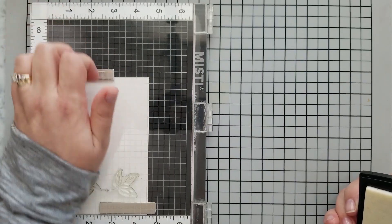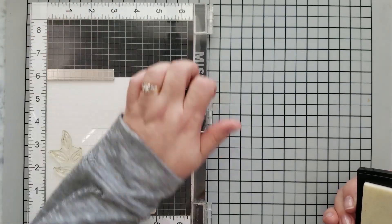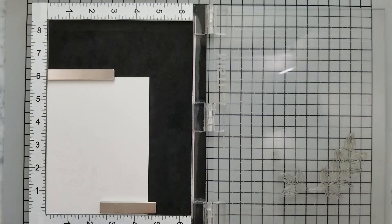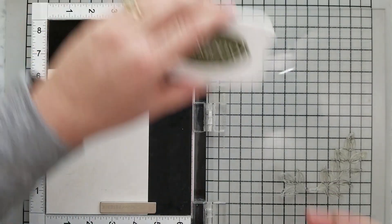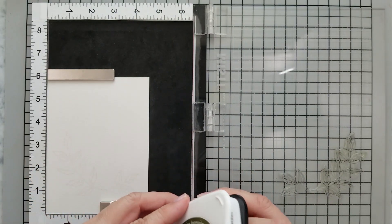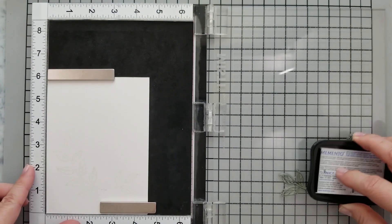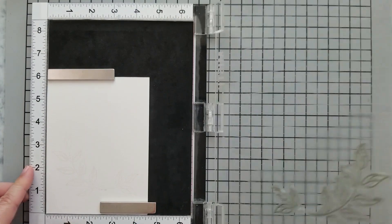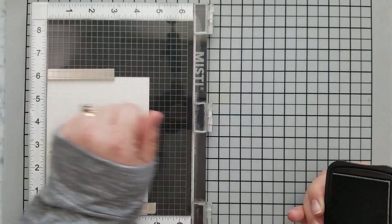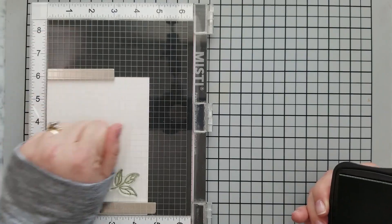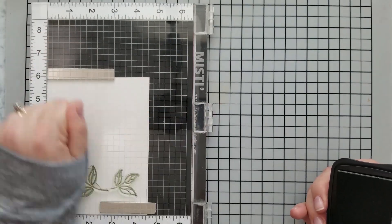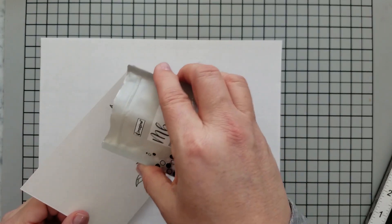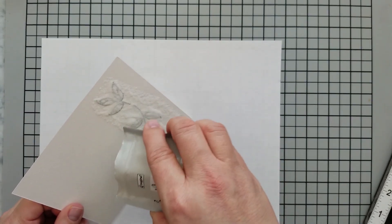So you see here I have my watercolor paper in my MISTI. I've laid down anti-static powder and this is heavy watercolor paper so it has a lot of texture. I'm going to stamp the image several times first with my Versamark ink and then once I feel like my image is completely stamped, I'm going to go over that with my Olive Grove ink. Then we're going to cover it with clear embossing powder and heat set that.